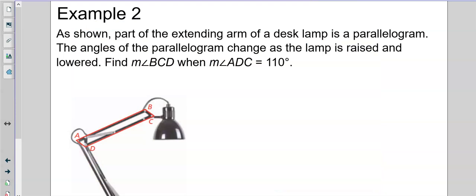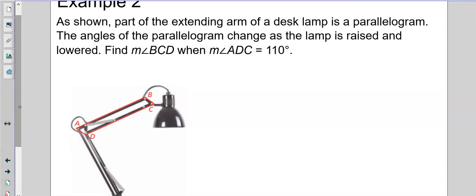As shown, part of the extending arm of a lamp is a parallelogram. The angles of the parallelogram change as the lamp is raised and lowered. Find the measure of angle BCD when angle ADC is 110. So, BCD, I'm just going to make this a little bit bigger. And I want to say this is D, this is C, this is B, and this is A.